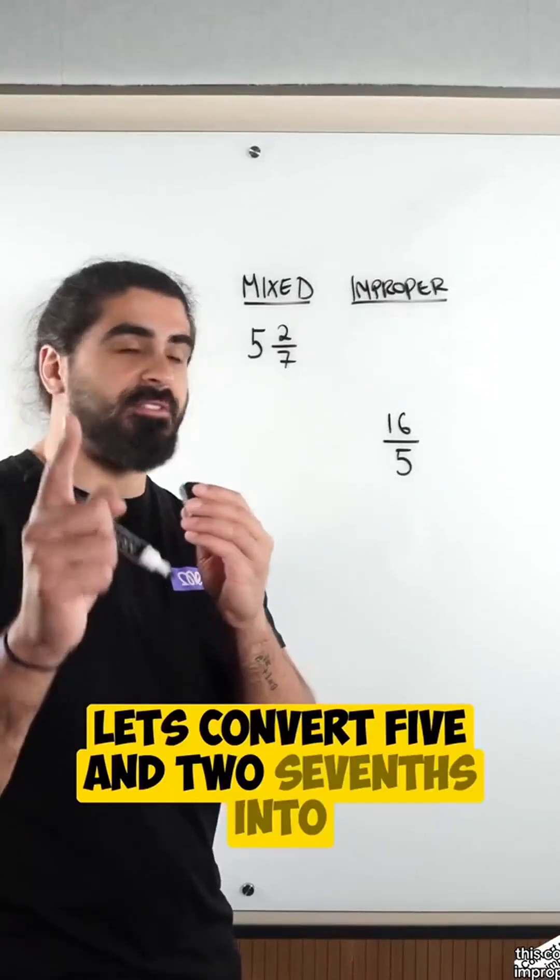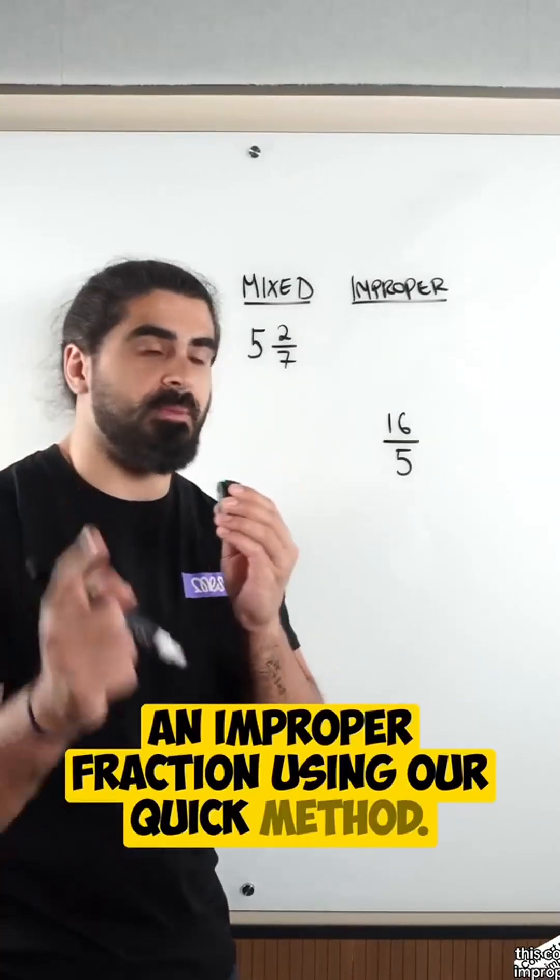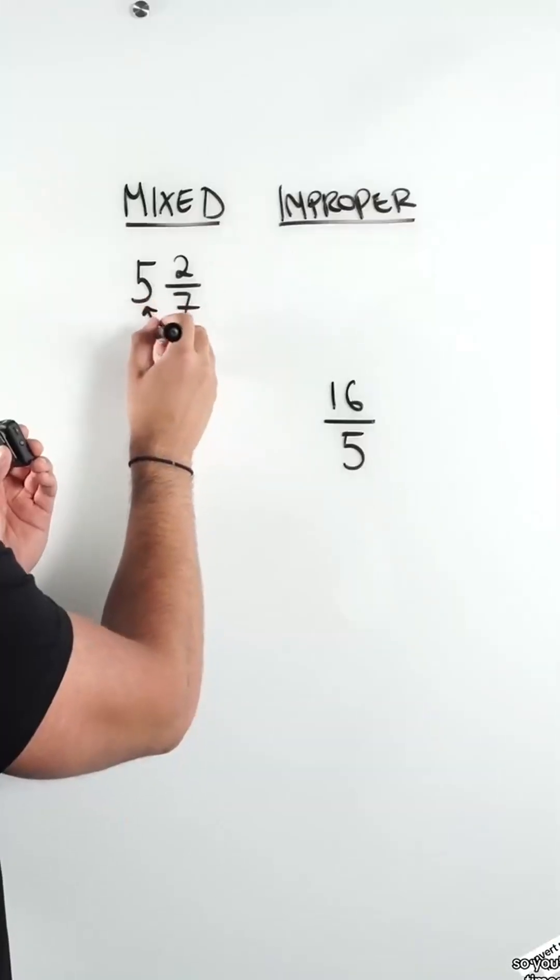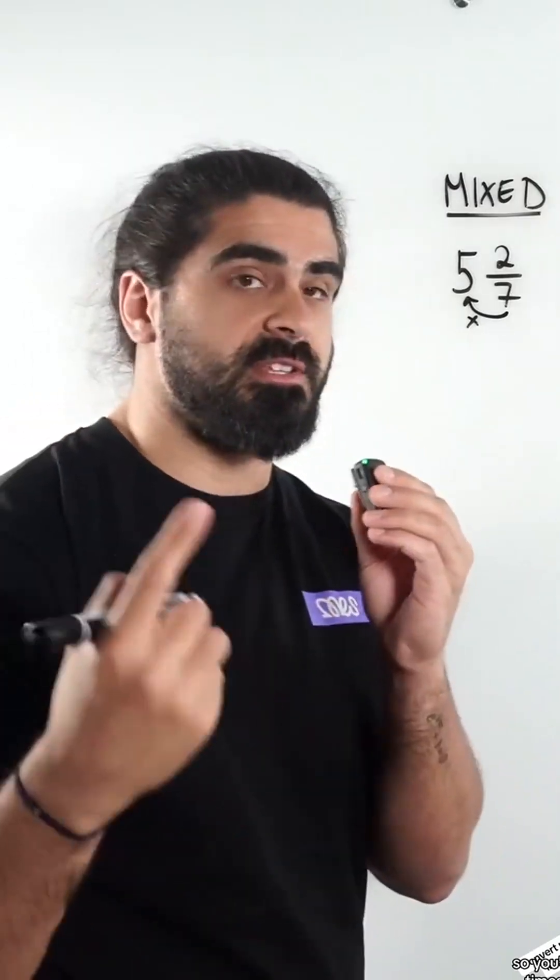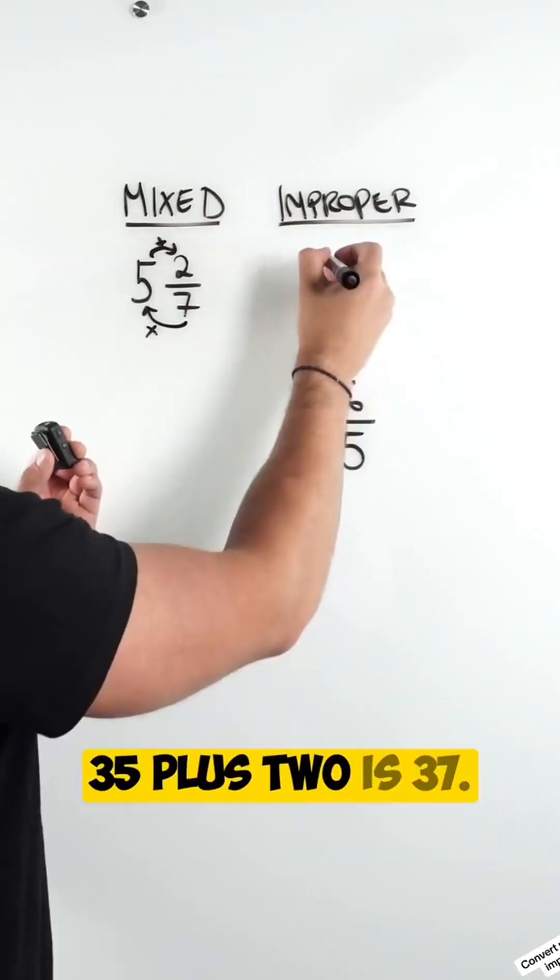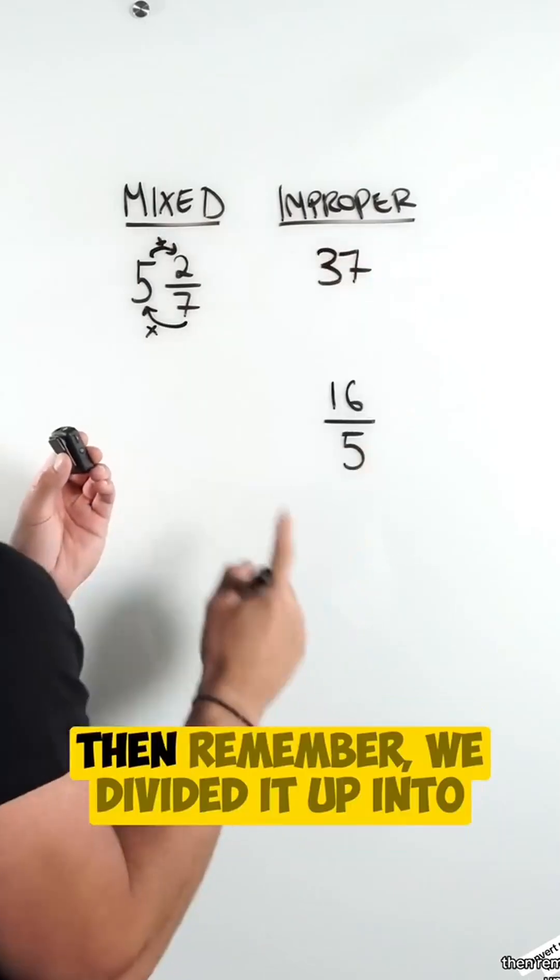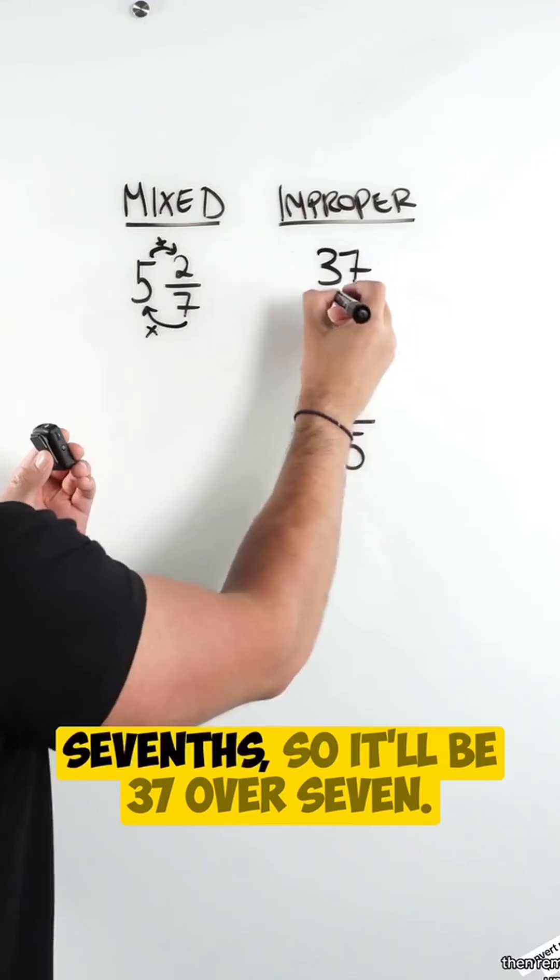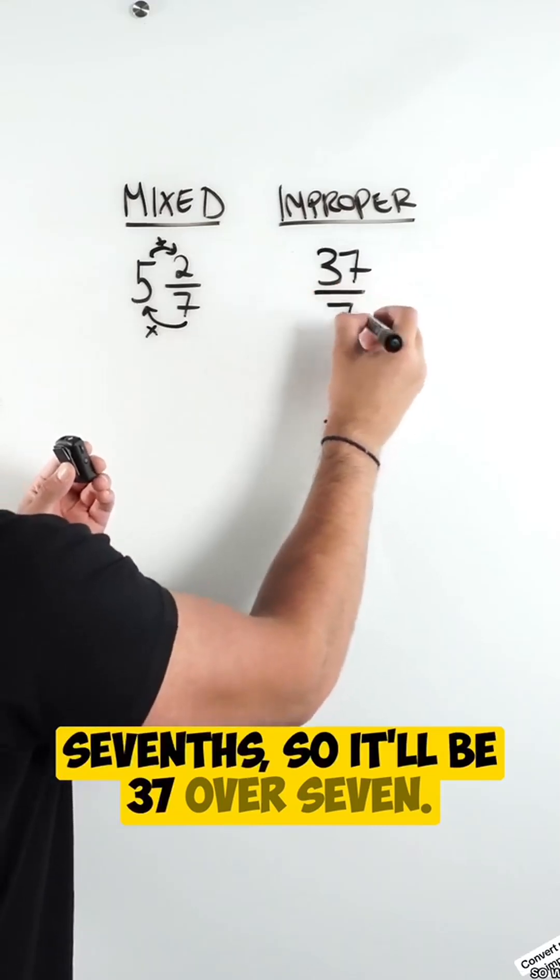Let's convert 5 and 2 sevenths into an improper fraction using our quick method. So we're going to do 7 times by 5, which is 35, and then we add it to 2. 35 plus 2 is 37. Now remember, we divided it up into sevenths, so it'll be 37 over 7.